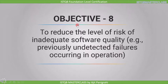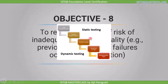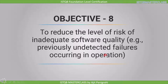The eighth objective is to reduce the level of risk of inadequate software quality — for example, previously undetected failures occurring in operation. This objective is related to objectives 5 and 6: we need to find defects in the same stage in which they are introduced, otherwise they will only be found during operation, and we already know the impact of faulty software.